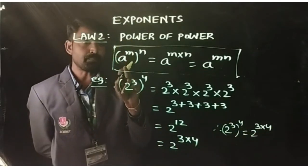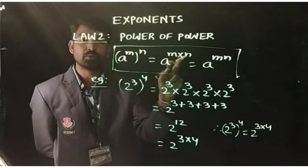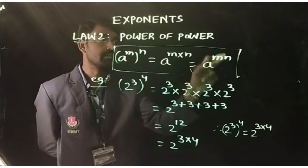Now, coming to the formula: (a^m)^n equals a^(m×n) or a^mn.